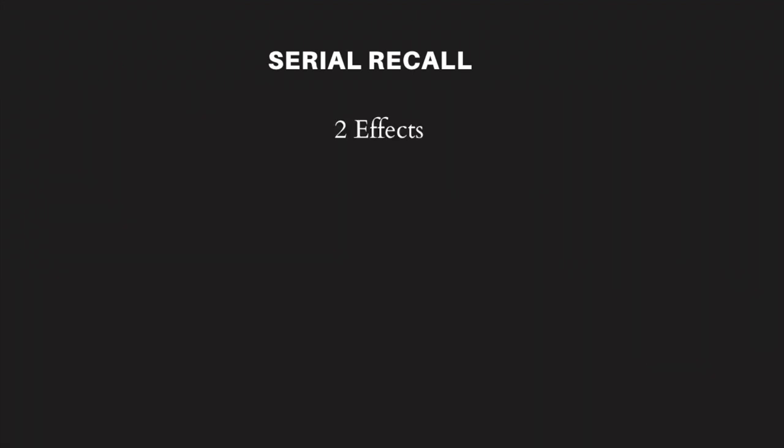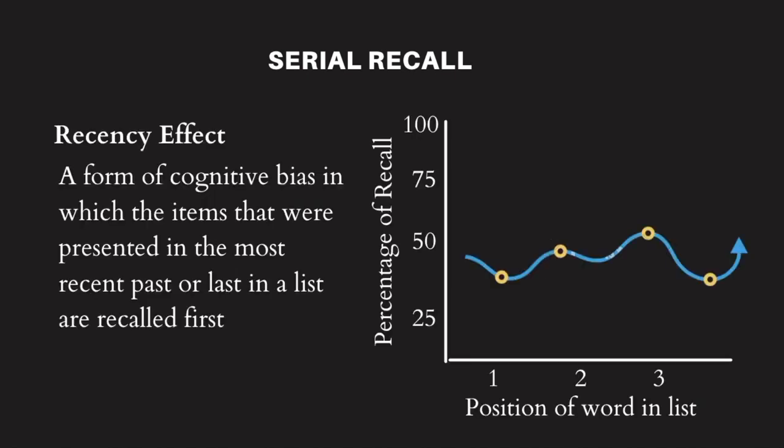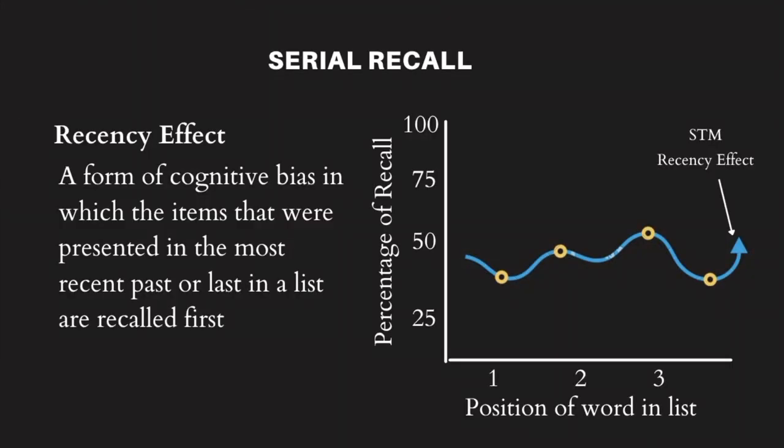Two types of effects can impact our serial recall abilities and accuracy. The first is referred to as the recency effect and the second as the primacy effect. Recency effect occurs when we tend to recall information that was active in the most recent past. In a study by Glasner and Kunitz in 1966, participants tended to recall words at the end of a list better than those in the middle. The recency effect has been considered evidence for short-term memory storage and thus for the Atkinson and Schifferenz multi-store memory model.